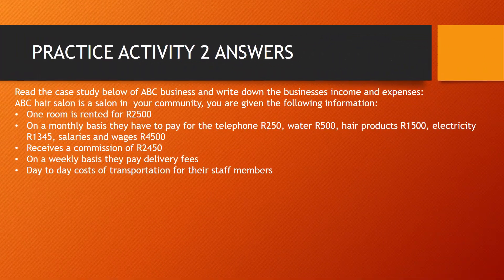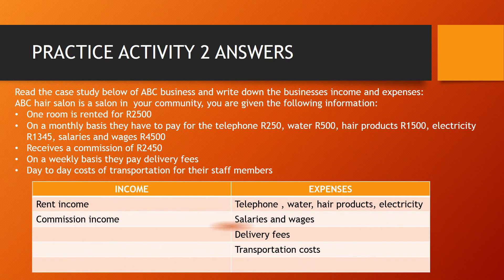Moving on to Practice Activity 2 — you were given a case study and had to write down the business income and business expenses. Under income we have rent income and commission income. Under expenses we have telephone, water, hair products, electricity, salaries and wages, delivery fees, and lastly transportation costs.